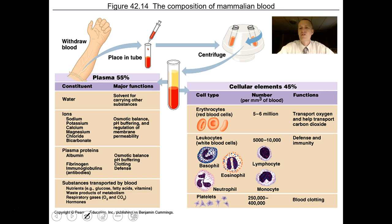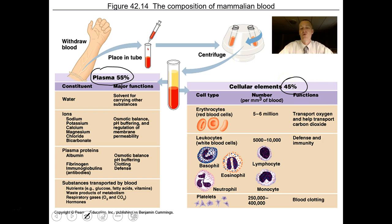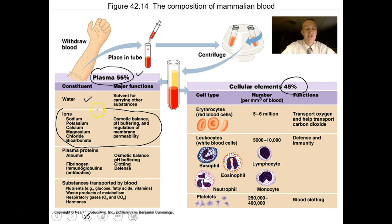The composition of mammalian blood is interesting. Most of it is liquid — 55% is plasma and 45% is cellular in nature. There are plasma banks where people donate plasma and get paid. Most of plasma is water, but a lot of it consists of various ions and molecules that circulate throughout.